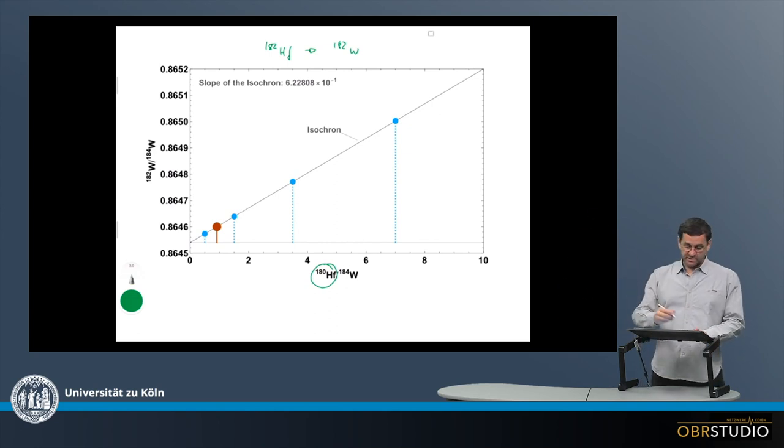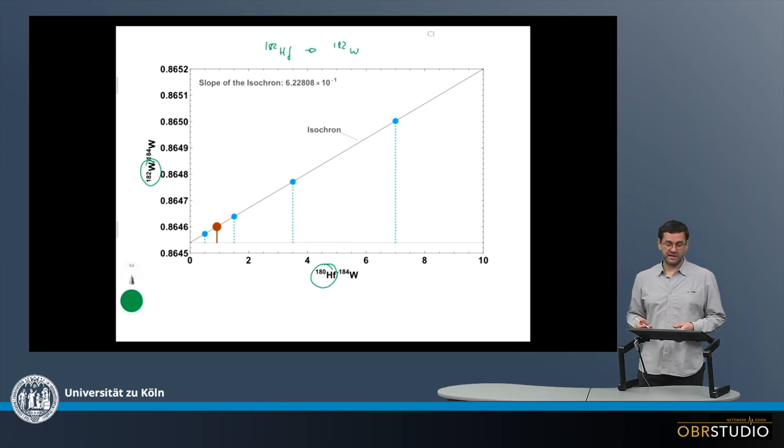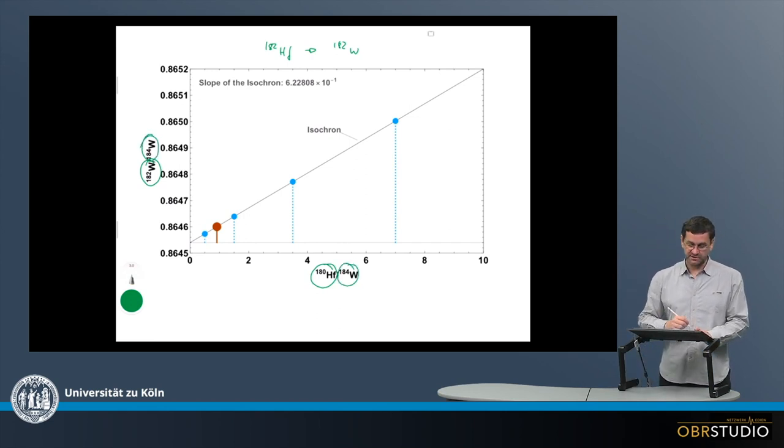On the y-axis, the daughter is plotted. So this is 182 Tungsten. Now because isotopes are always reported as ratios, we need a normalizing isotope, which in this case is the 184 Tungsten here.